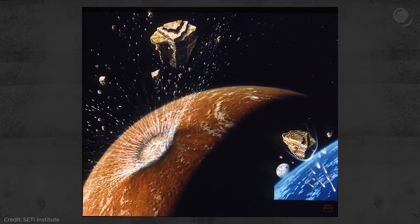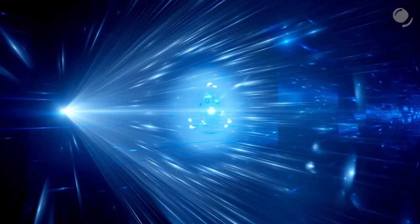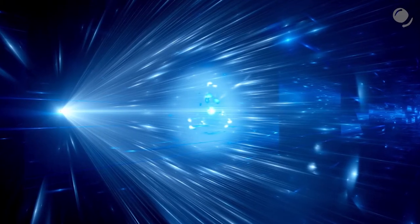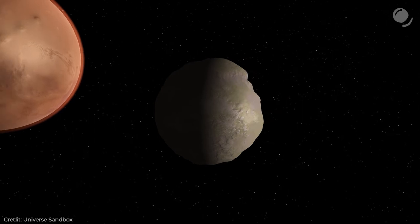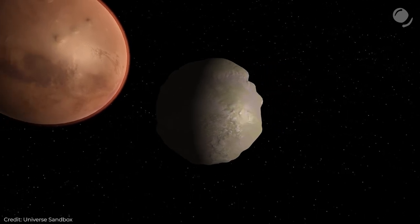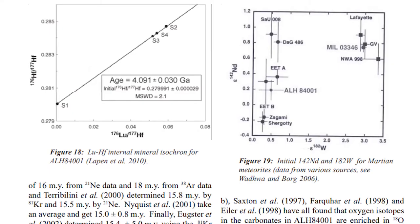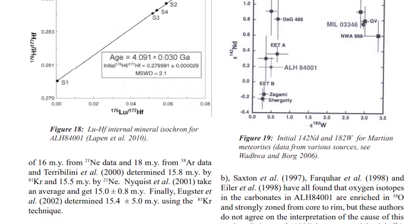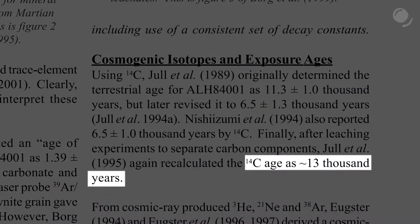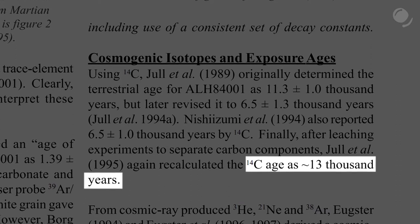The collision that threw the rock into space happened around 16 million years ago. How do we know? We have to thank cosmic rays. High-energy particles bombard certain elements, and as a result certain isotopes are formed. When in space, a rock is exposed to a specific amount of cosmic rays, so based on how much of certain isotopes are present, we can figure out how much time it spent in space. In this case, a series of studies used Helium-3, Neon-21, Argon-38, and Krypton-81. ALH 84001 arrived at Earth about 13,000 years ago, which was determined using carbon-14 dating.